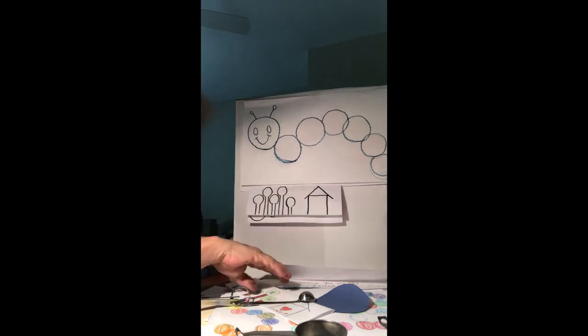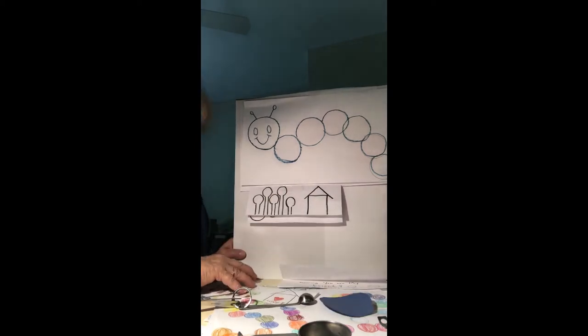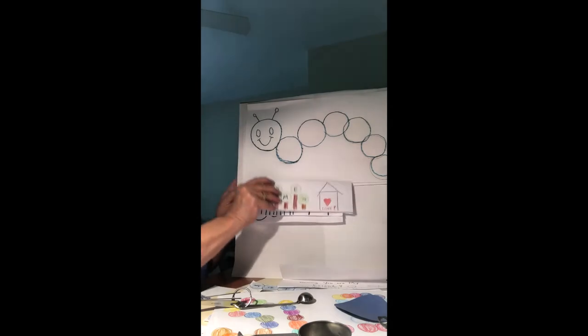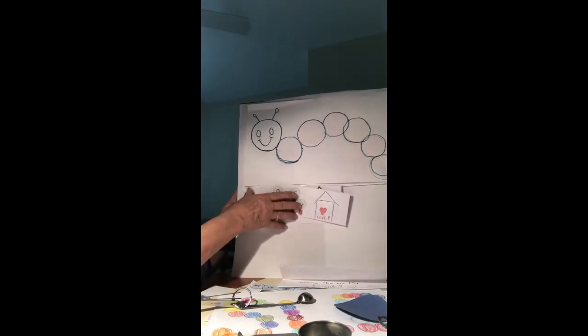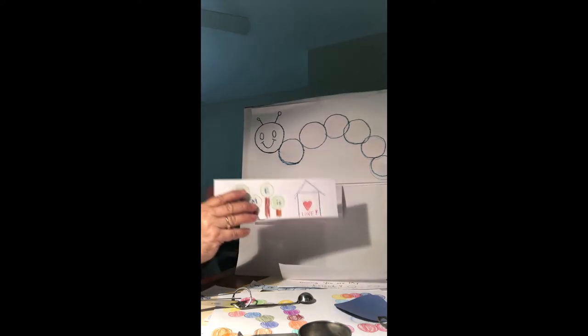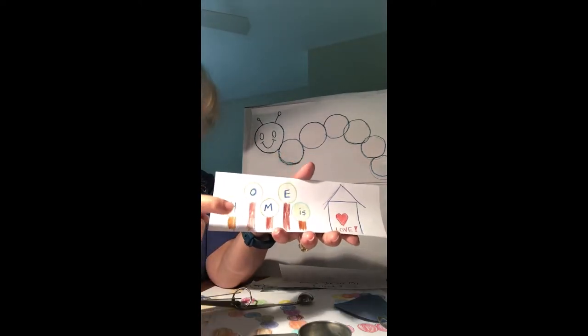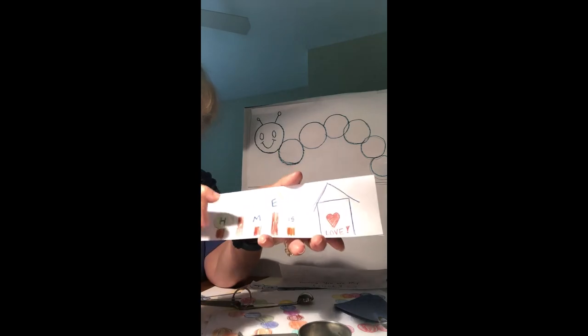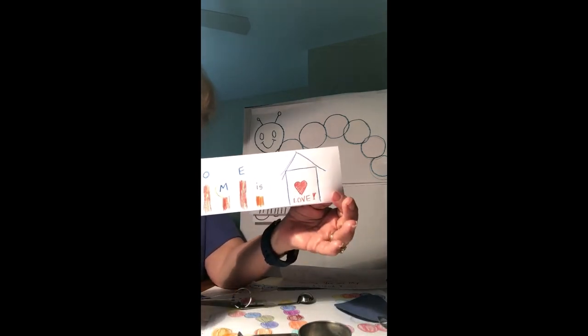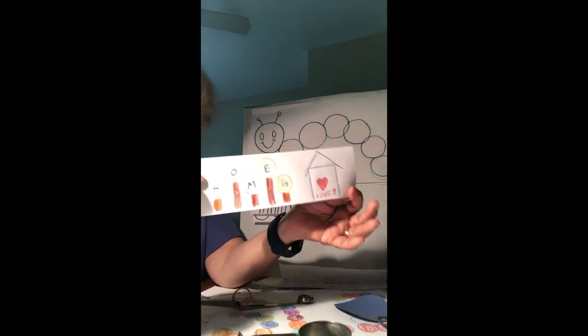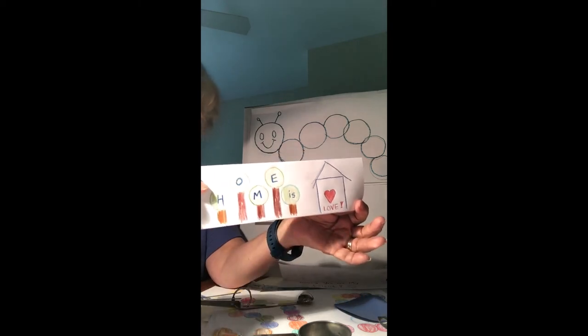Now this card looks like this once you color it. I wrote some letters in there and I wrote 'home is,' and inside the house I put a heart and 'love.' So this is another card you can create to send to some of your friends or share with somebody in your family.